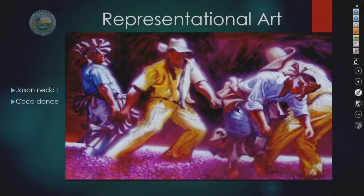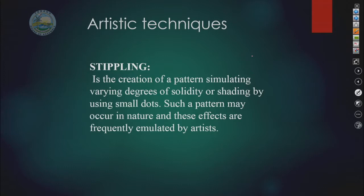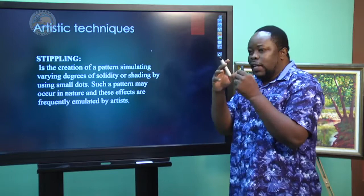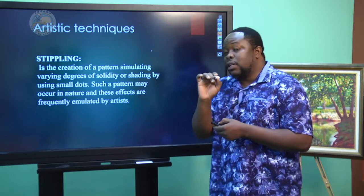Our first technique will be stippling. Stippling is the creation of a pattern simulating varying degrees of solidity or shading by using small dots. Such a pattern may occur in nature, and these effects are frequently emulated by artists. Have you seen an orange before? When you look at the skin of the orange, it is usually very rough, and you would see some little dots. In the process of imitating those, the little dots can be considered stippling.